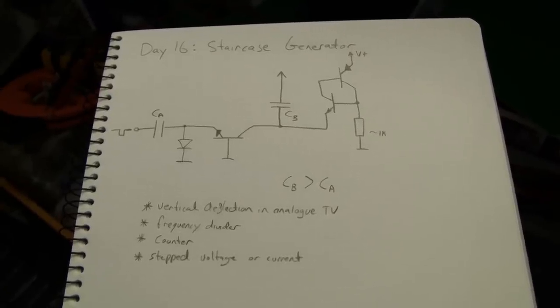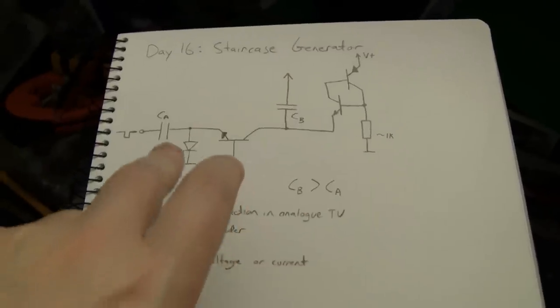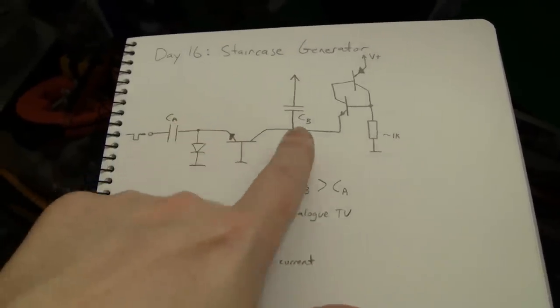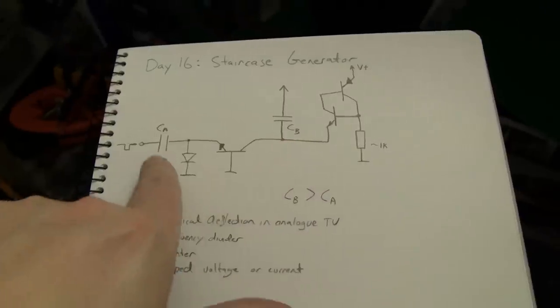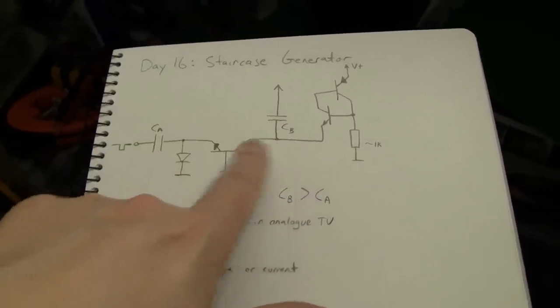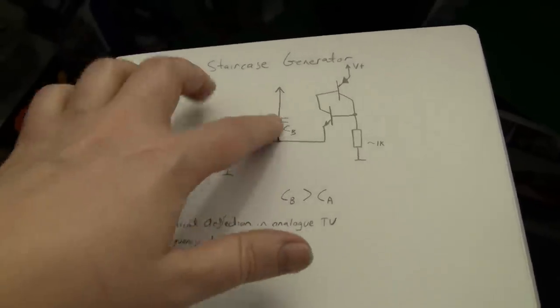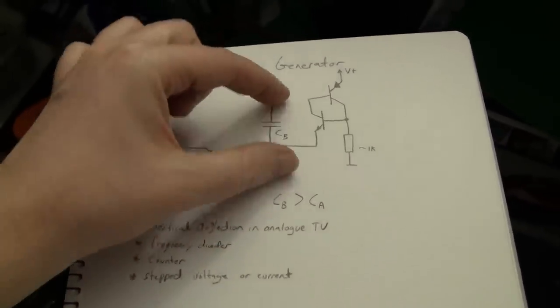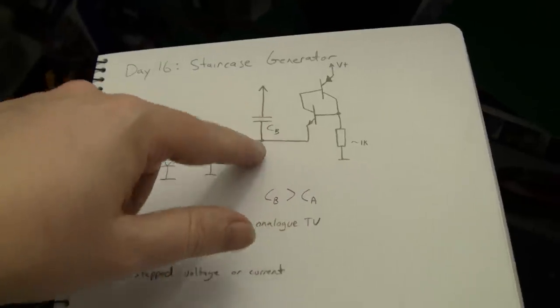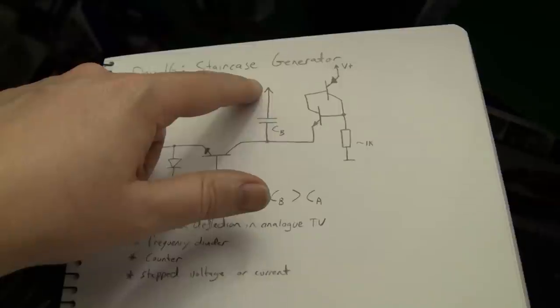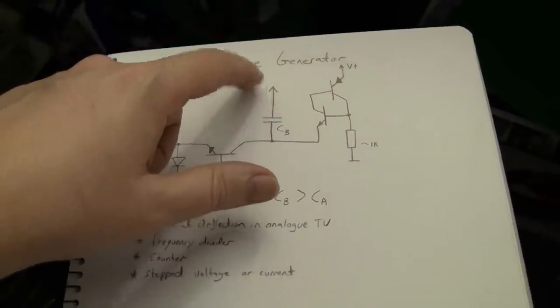Anyway, how does it actually work? It's actually quite a clever circuit. It works with the ratio between two capacitors, CB and CA. This capacitor must be larger than this capacitor for it to work, but essentially consider this capacitor initially discharged all the way down so that the voltage at this point is basically at the top supply rail.